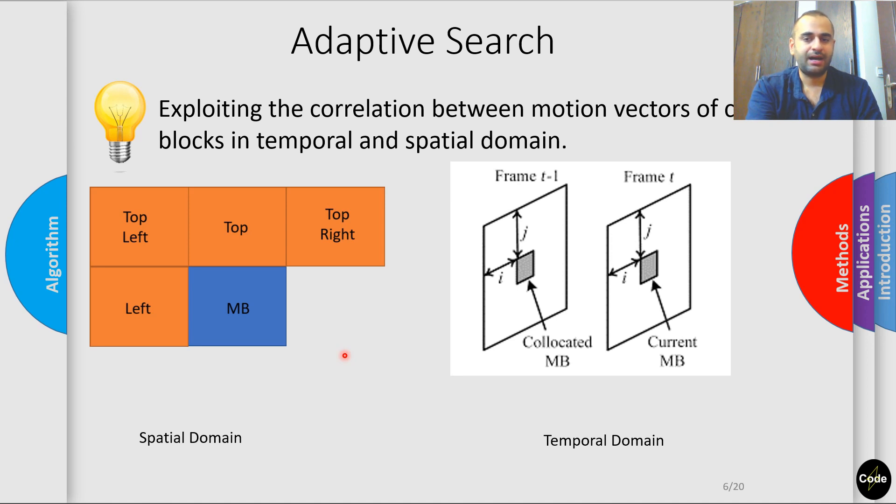Now, let's consider how we can enhance these algorithms. On one end, we have the full search algorithm which offers high accuracy but demands significant computational resources. Conversely, there are faster algorithms like adaptive methods, which sacrifice some accuracy for efficiency.